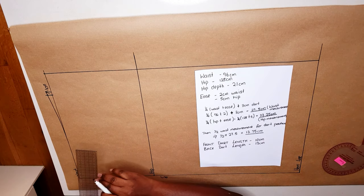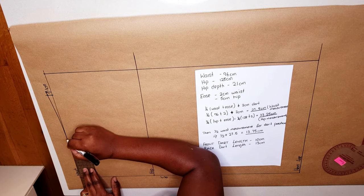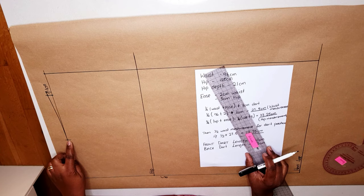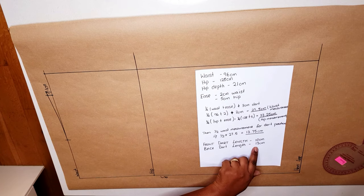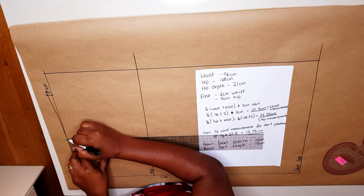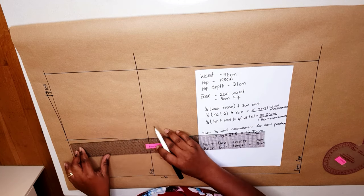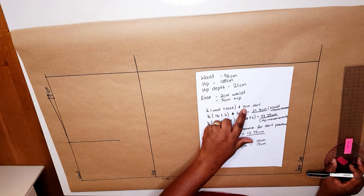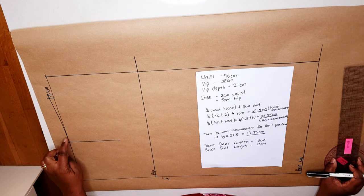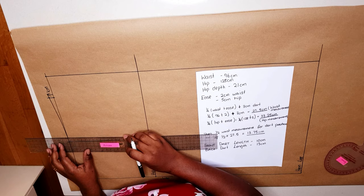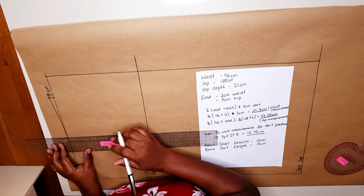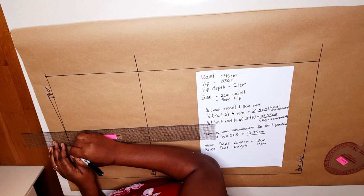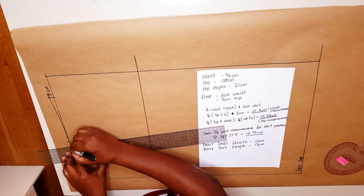Take your half-waist measurement and mark it on your waistline from center back — for me that's 13.75 centimeters. Since this is our back pattern, square a line straight down from that point, 13 centimeters long — that's our dart length. Our dart is 3 centimeters wide, so divide by two to get 1.5 centimeters on each side of the line. Mark 1.5 on each side, then connect these points to form our dart legs.